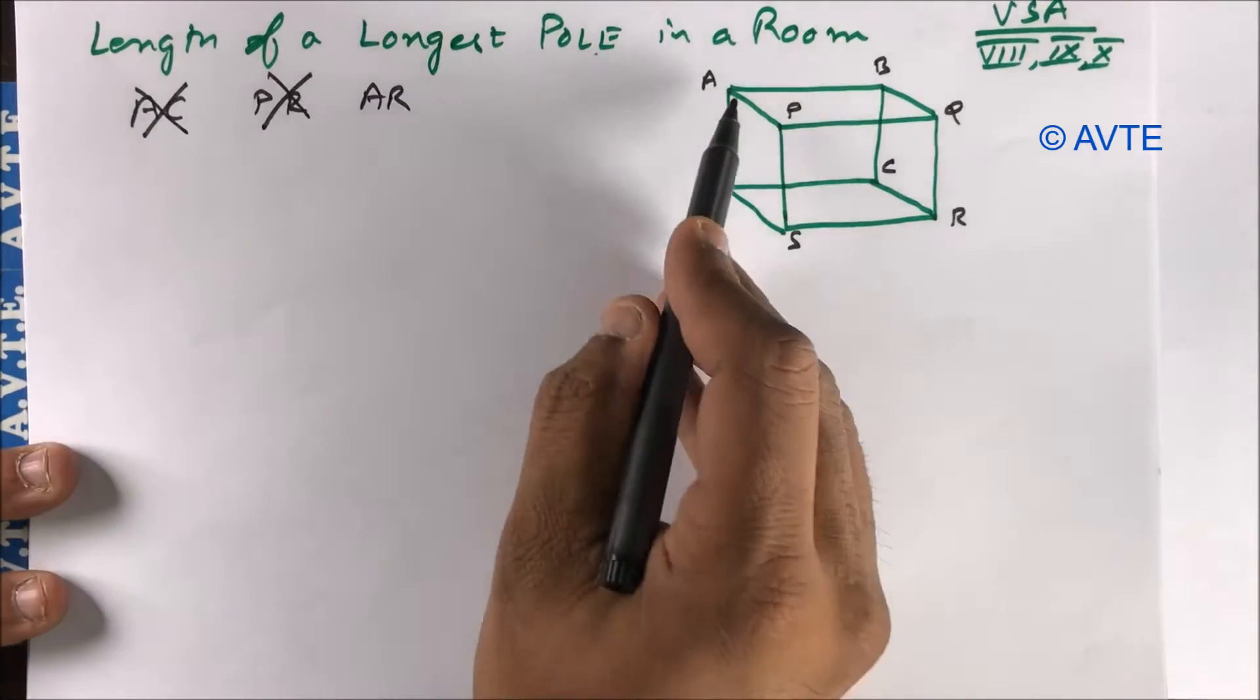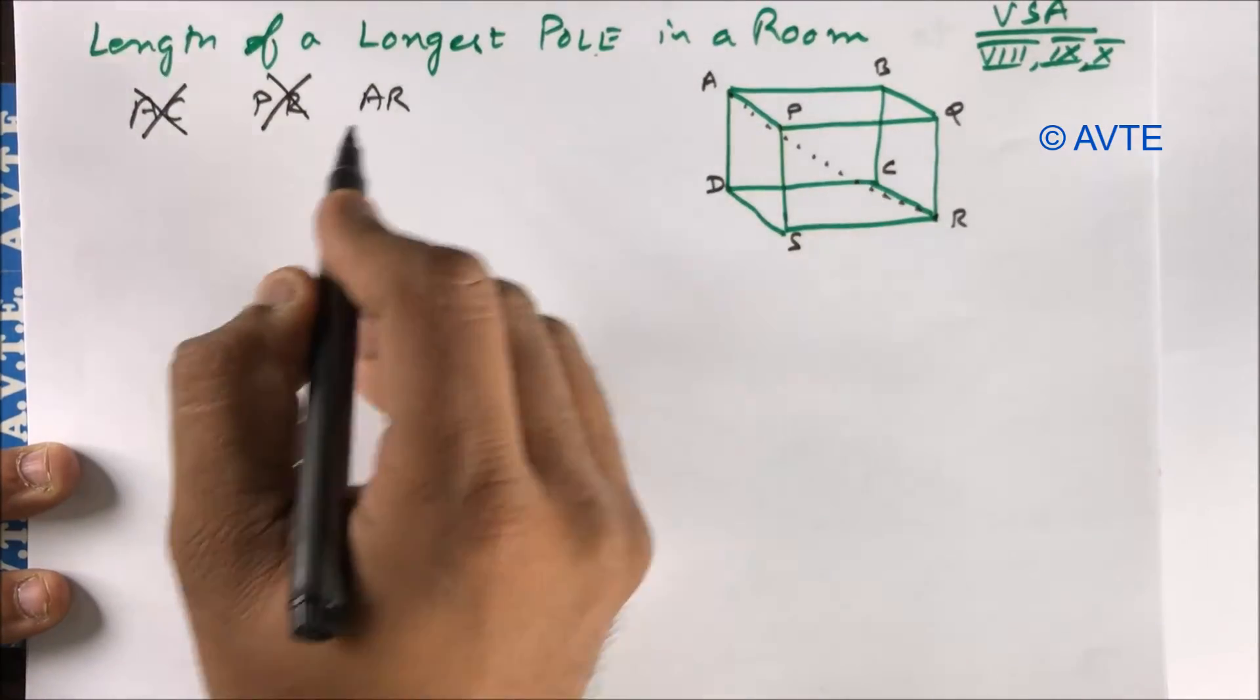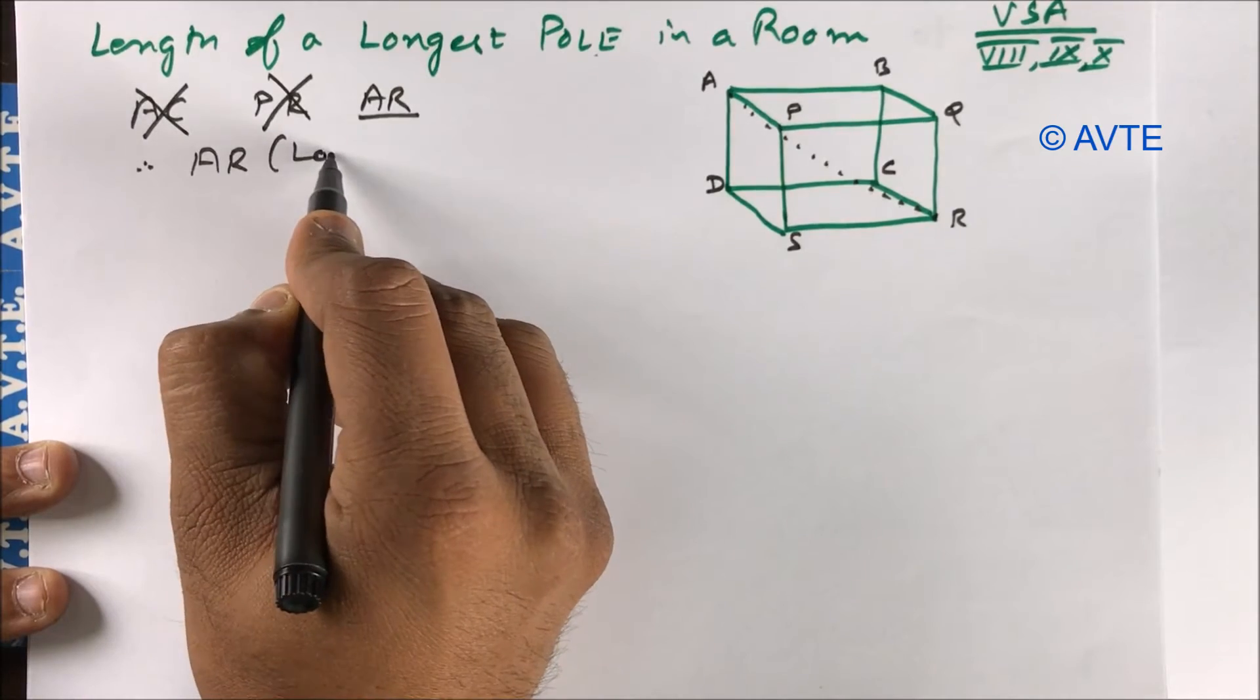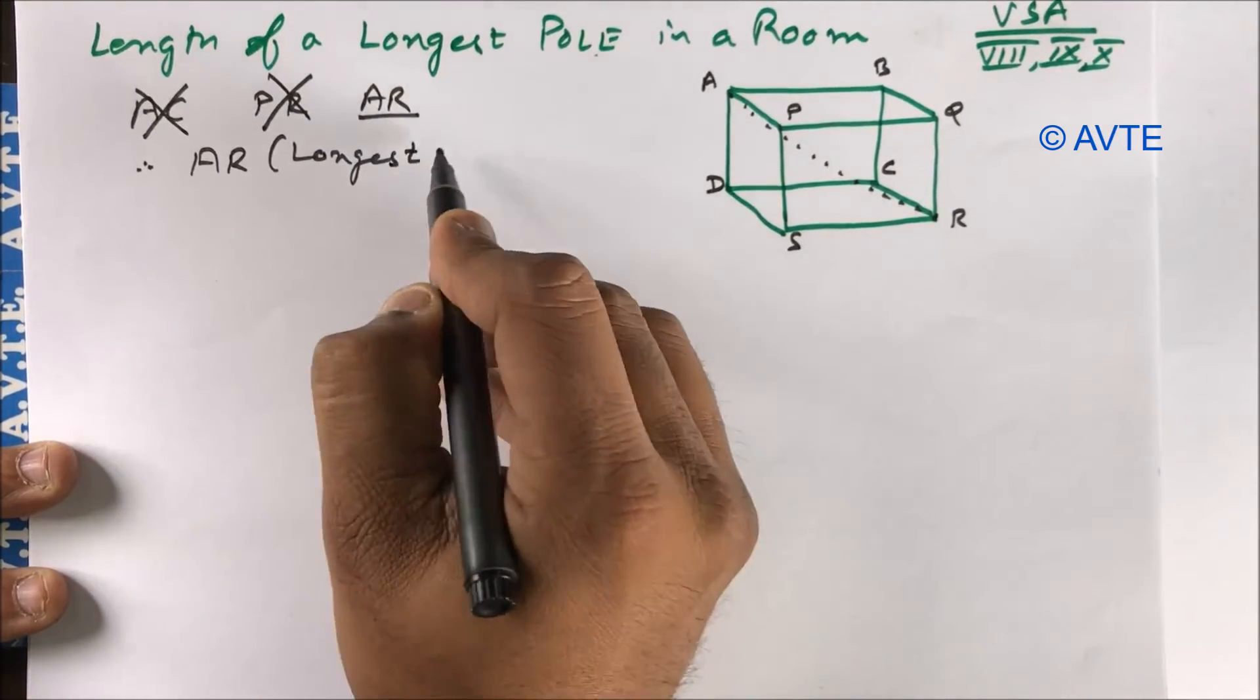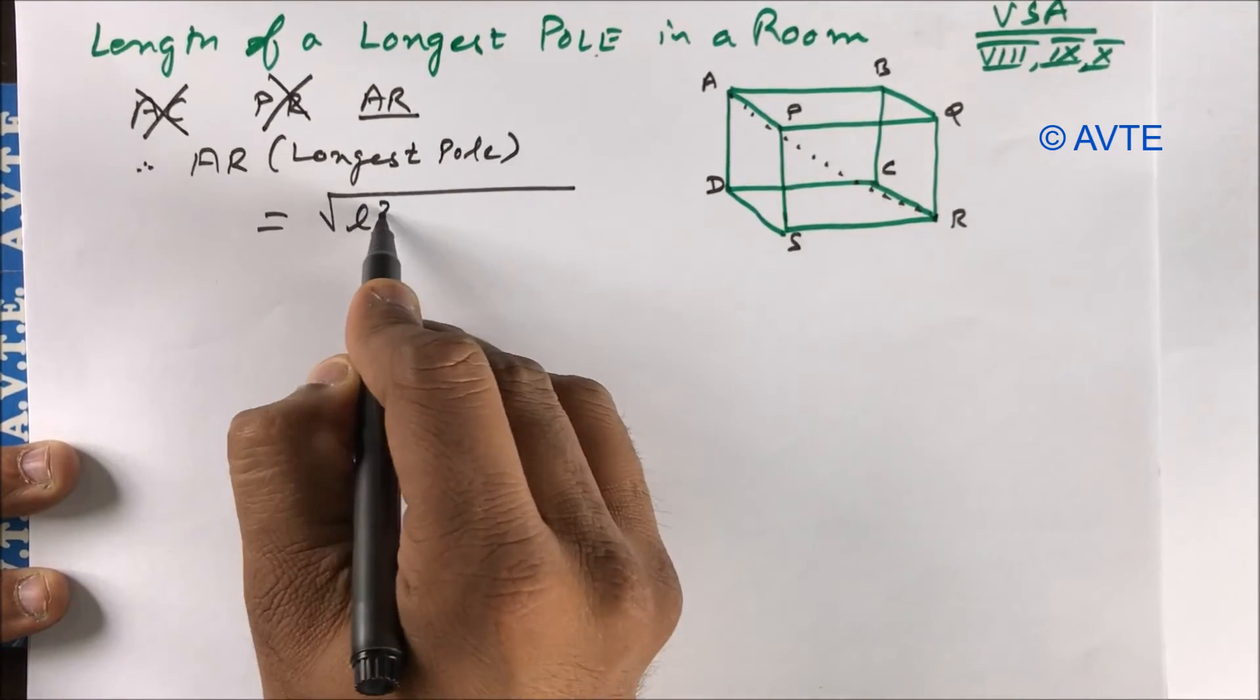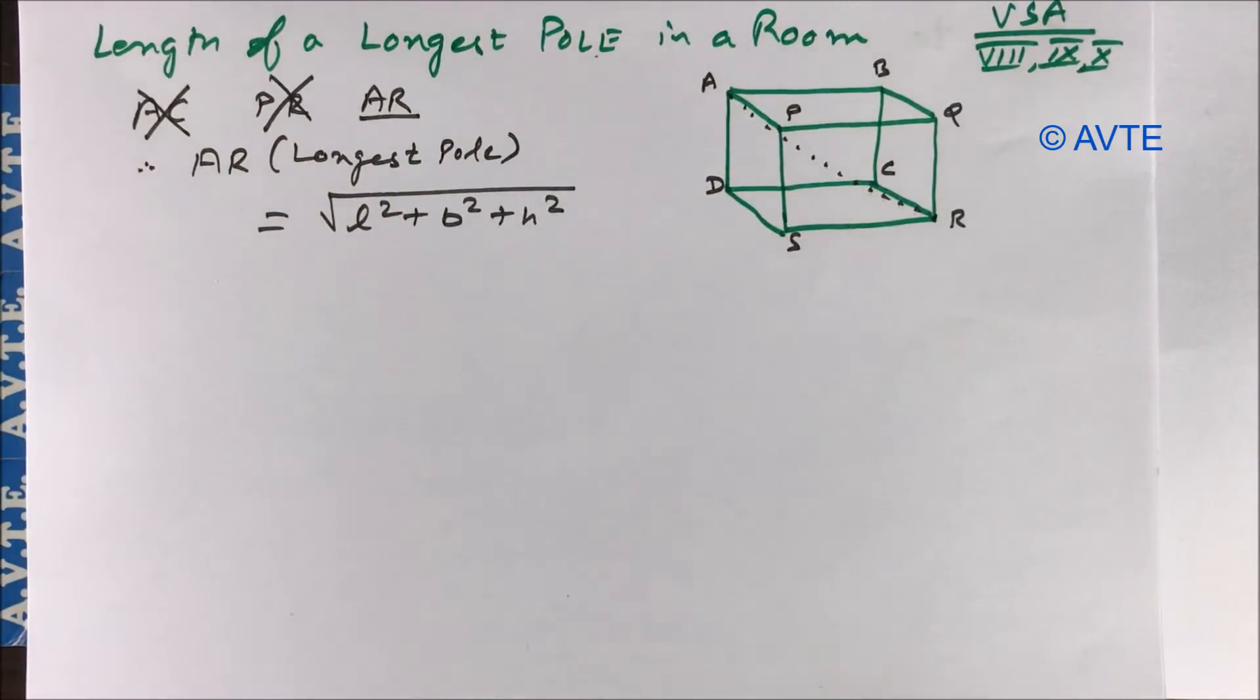Okay, how to get this AR? I can derive the formula for this AR. The longest pole is under root L square plus B square plus H square. I just derived the formula.